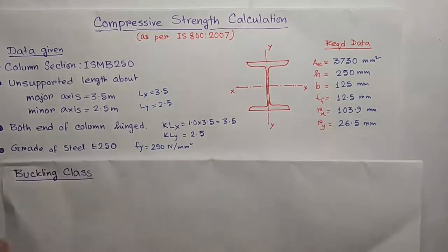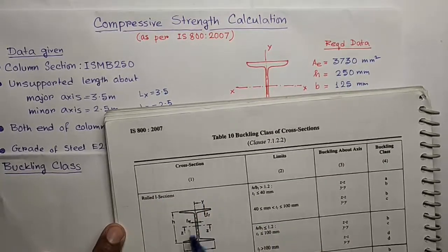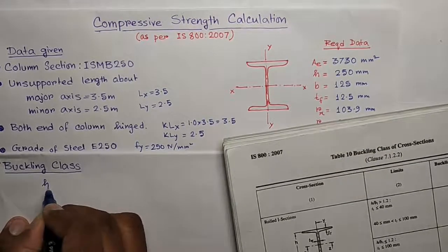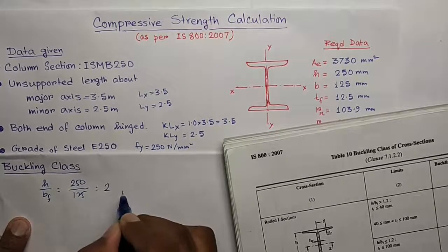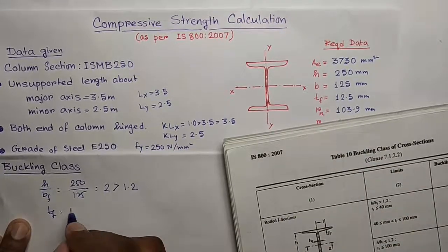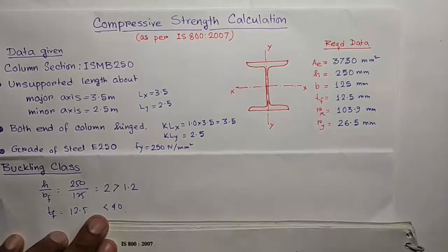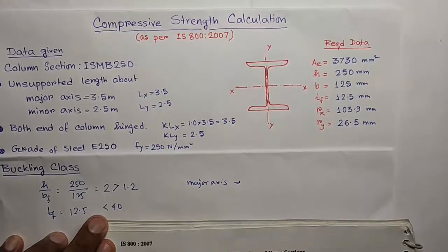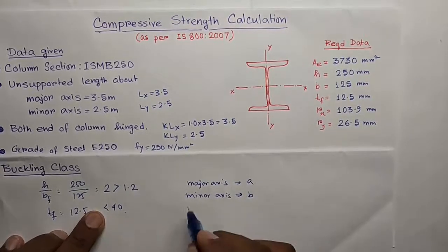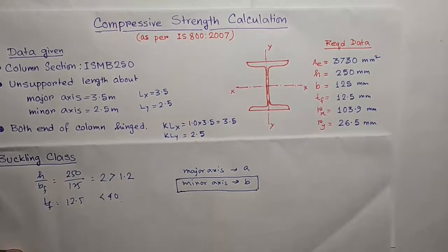Now the next step is determination of buckling class. Now go to table 10 of IS 800. For this rolled I-section there is a limit given here H by BF. In our case it is 2, which is greater than 1.2, and TF the thickness of flange is 12.5 which is less than 40. So this condition is satisfied. So about the major axis, we are bothered about this only as the slenderness ratio is maximum for buckling about minor axis.